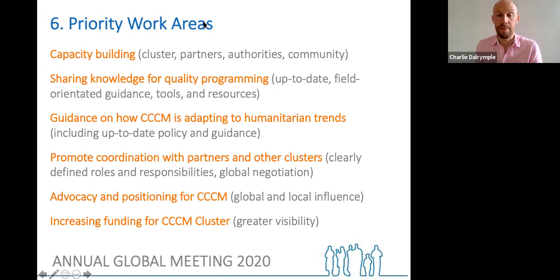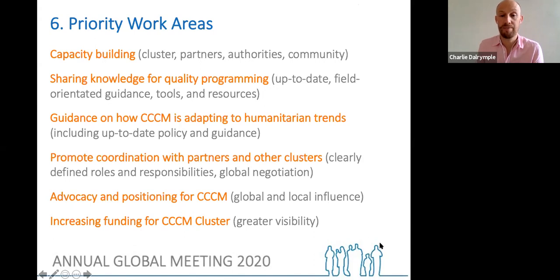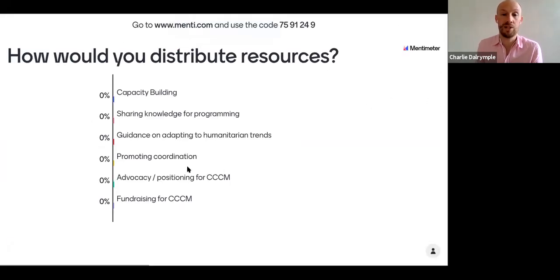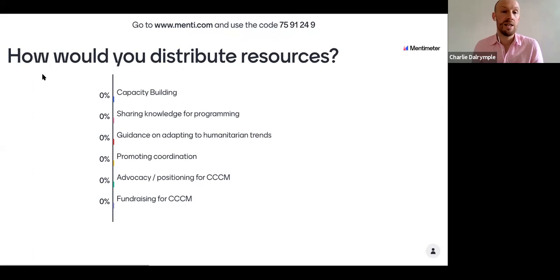It's not possible for us to do everything all of the time. So I want to ask you to guide the global cluster on where they should prioritise. We're going to go back to Menti. I want you to imagine you've got 100 resources — $100, 100 people, a mixture of money and human resources — and you need to decide where you would distribute them across the six priority areas. Put in the code and allocate your 100 points to the six different areas. Let's see where we think the global cluster should be prioritising its resources.